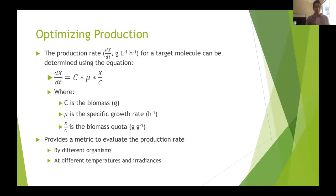Taking all that, what I'm going to be doing is looking at the production rate of target molecules using the production rate equation shown here. It takes into account the biomass, the specific growth rate, and the biomass quota — which is the proportion of the biomass made up of my target molecule. I can use it as a metric to evaluate production rate between different organisms under different conditions, which typically can be challenging when looking at different species of phytoplankton. But this gives us a way to more objectively compare species and see which ones are performing best for which target molecules.